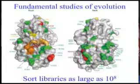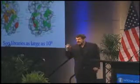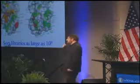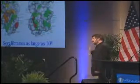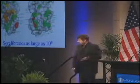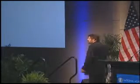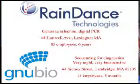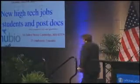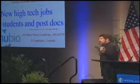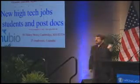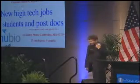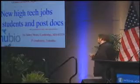We've made some very fundamental studies of evolution of molecules using directed evolution, where we can sort libraries as large as 10 to the 8th. Typically, if you're very lucky, you can sort a library of about 10 to the 3rd — about 1,000. Here we can very easily do libraries of 10 million or 100 million. This has tremendous applications for biotechnology, and people from my group have followed this up. They've started a company that does genomic selection and digital PCR, and another company trying to do very rapid and inexpensive sequencing for diagnostic purposes. Many of my students and postdocs now work in these companies. I see this as an important thing — to give back to society and create high-tech jobs when there are opportunities.